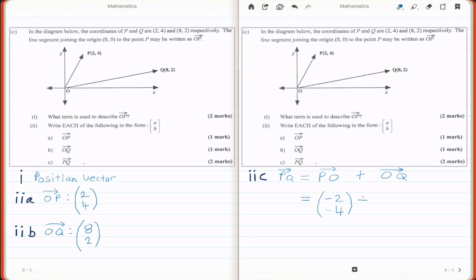Plus OQ, which is the same as before, which is 8, 2. You simply add these two vectors together now, and you get the vector 6, negative 2, which is the vector PQ.